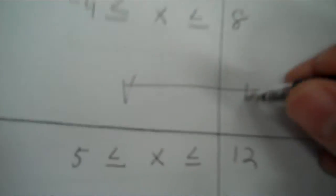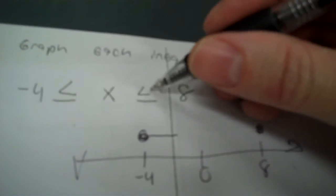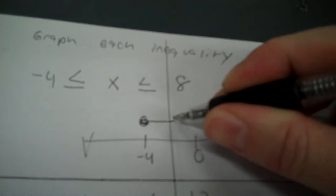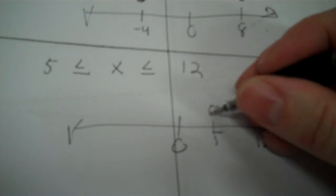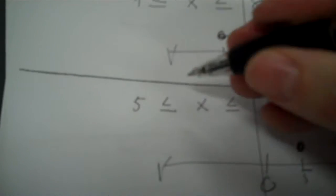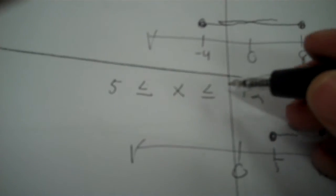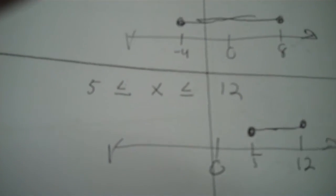Now you're taking the inequality and graphing it — that means with the number line. We put 0 in the middle, negative 4 here and 8 here. Circle both of them. When I look at these, it opens up towards the X, so it goes this way. This way, it opens towards the numbers, so it goes this way. Then we just keep going until they connect. So 5 and 12 — it's opening up to the X so it goes this way; here it's opening to the numbers so it goes this way.